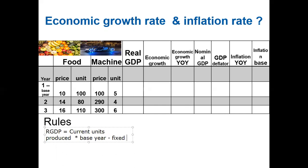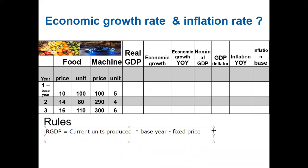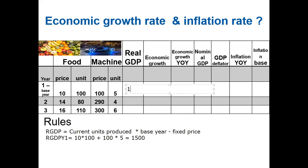The base year prices are the fixed prices — the year used to eliminate the effect of price level increases. Using this formula for GDP in year one: 10 times 100 equals 1000, plus 100 times 5 equals 500, giving us a real GDP of 1500 for year one.